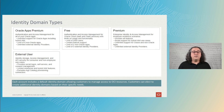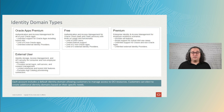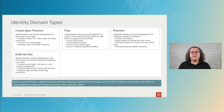When you create an OCI tenancy, a free identity domain is provisioned, and it's what you will use to manage the access to your infrastructure and platform resources. It is also possible to use federation to integrate with external identity providers, like an existing Active Directory in your company.